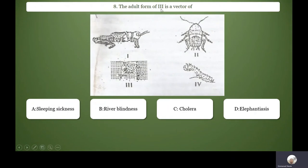III is a vector of elephantiasis. III is the pupal stage of mosquito, and of course you know mosquito is the vector of elephantiasis. Elephantiasis is caused by the filaria worms (Wuchereria bancrofti) transmitted by mosquito. The filaria worms when it gets into humans penetrates into the lymphatic system and blocks the lymphatic vessels, and parts of the body will start swelling. We call that disease elephantiasis.